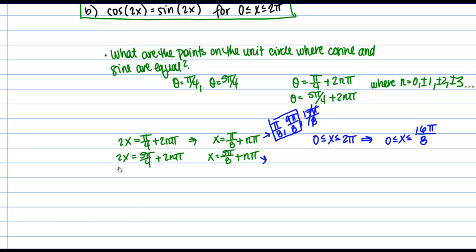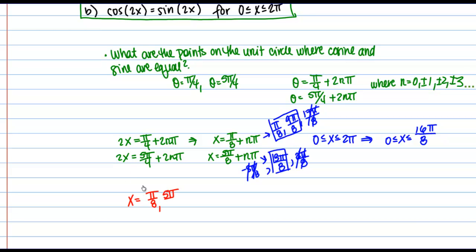For 5 pi over 8 plus n pi: adding pi, which is 8 pi over 8, gives 13 pi over 8. Adding another pi gives 21 pi over 8, which is out of my interval. Subtracting pi gives negative 3 pi over 8, which is also too small. So let's list out all our solutions: pi over 8, 5 pi over 8, 9 pi over 8, and 13 pi over 8. You can verify these solutions by plugging them into the original equation and making sure it holds.